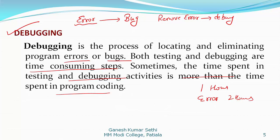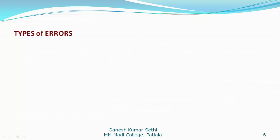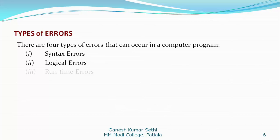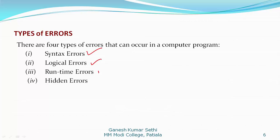There may be different types of program errors or bugs. We will discuss what are the different types of errors that can occur during programming. Basically, errors are divided into four categories: syntax error, logical error, runtime error, and hidden errors. Let us see them one by one.